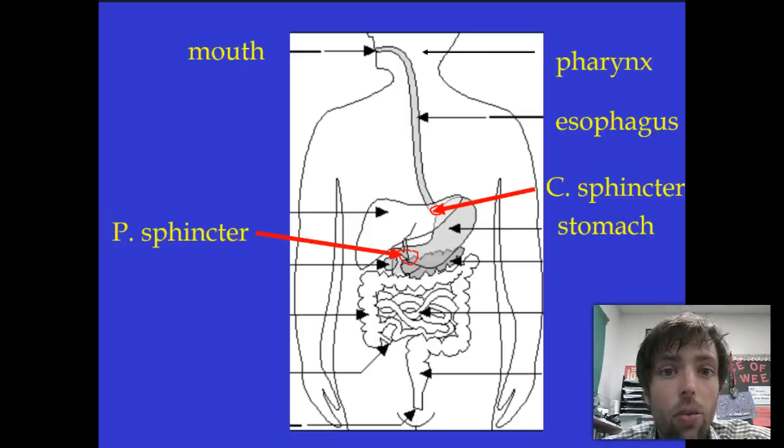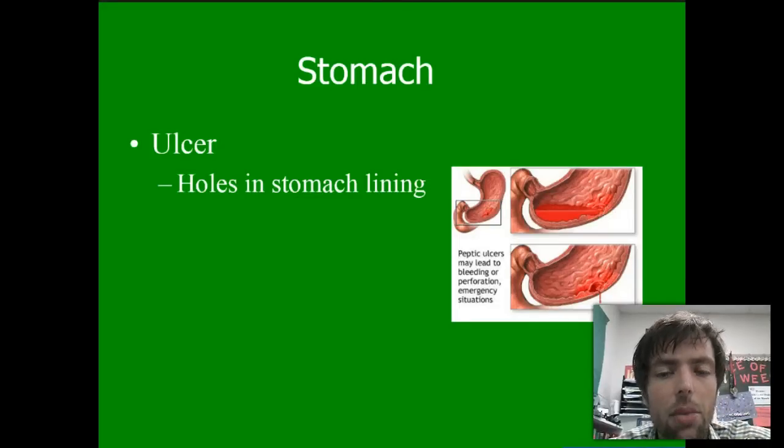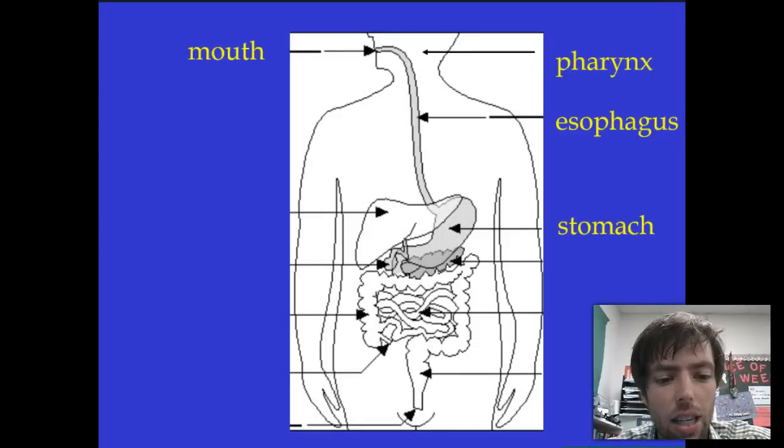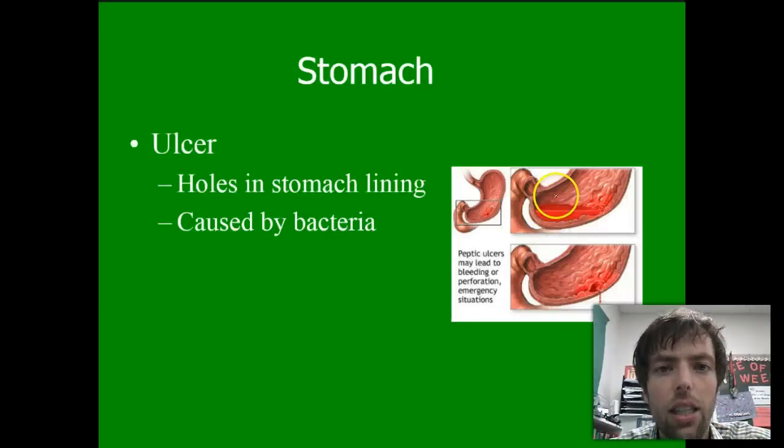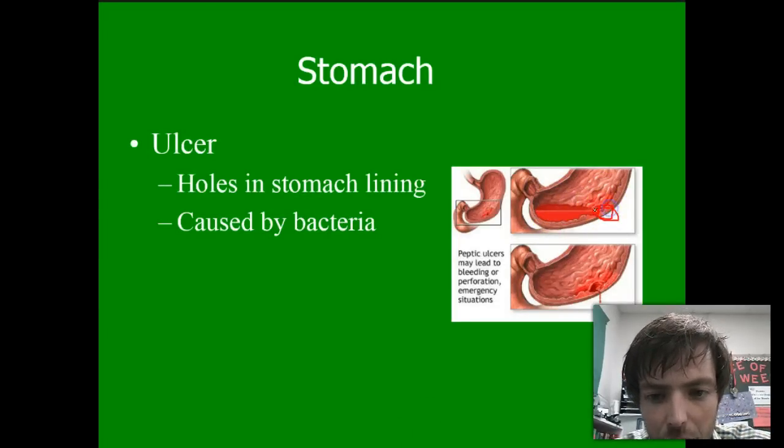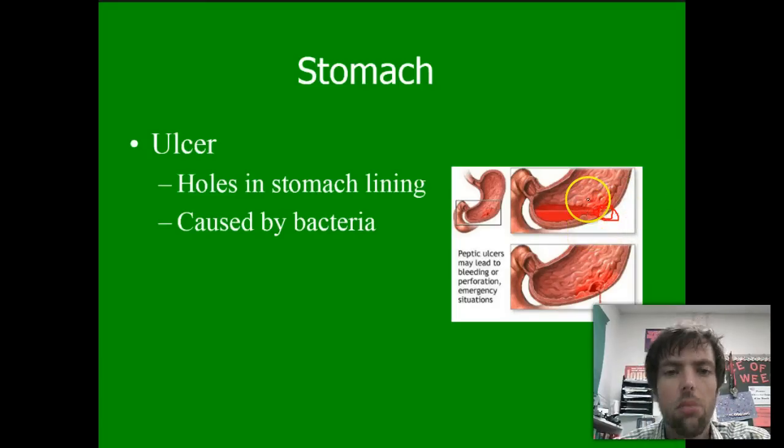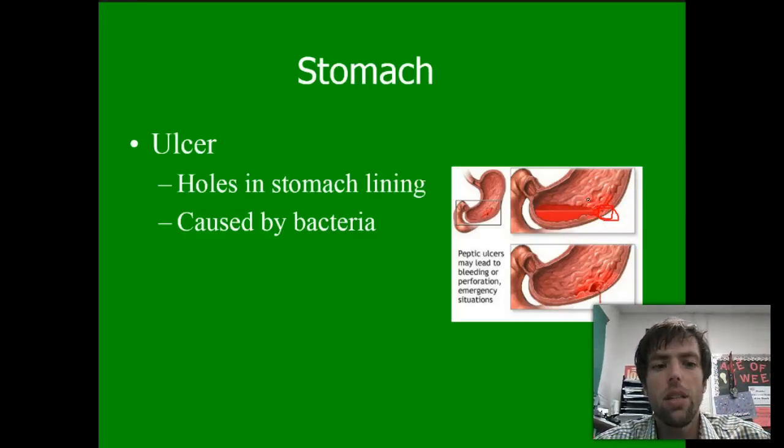And one more thing on the stomach before we leave it alone. Why don't we talk about ulcers? Ulcers are things that happen in your stomach when you get a hole. And that hole is caused by bacteria. Isn't that crazy? That bacteria can grow inside your stomach, and it'll make these little holes right here. And then your stomach acid can leak out. Oh, gross. And then it starts to burn away all these cells. So, the moral of the story is, don't let weird stuff grow in your stomach.